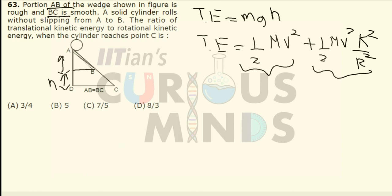The rotational kinetic energy will only be gained from point A to B. After that, there will be no gain in rotational kinetic energy, since there is no friction — only a smooth surface — so only the translational kinetic energy will be gained.